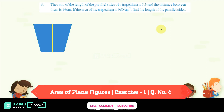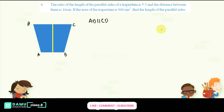Let's take trapezium ABCDE. Here AB is parallel to CD — so these two are the parallel sides. The ratio of parallel sides is equal to 5 is to 3, that is CDE is to AB equals 5 to 3.